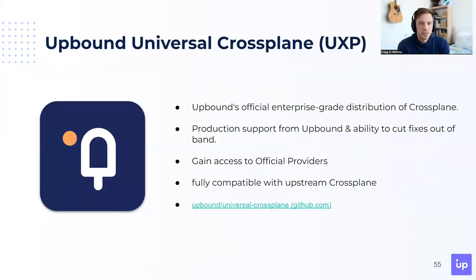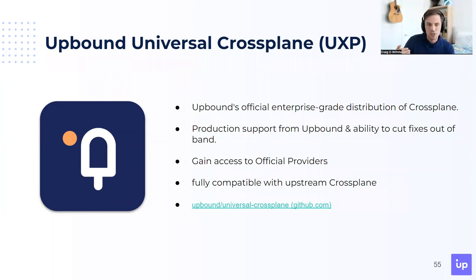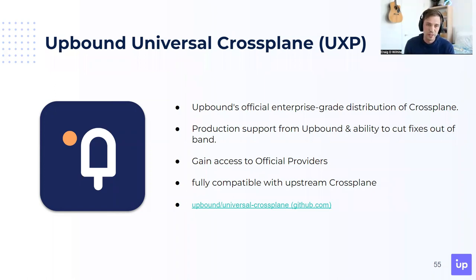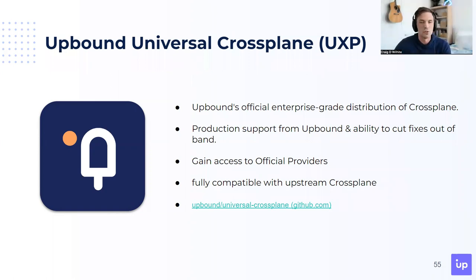With that, Upbound has Universal Crossplane — UXP. It's a turnkey experience for customers to build, deploy, manage, and secure their own control planes. It's fully open source and you can find it on GitHub. It allows you to access official providers — you need to be running UXP, which is a downstream distro of Crossplane, in order to get official providers. It's fully production-supported by Upbound and allows us to get fixes to customers faster. You can think of it as Upbound's official enterprise-grade distribution of Crossplane.